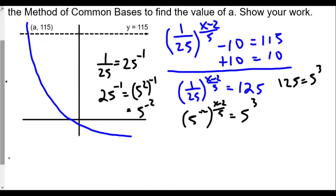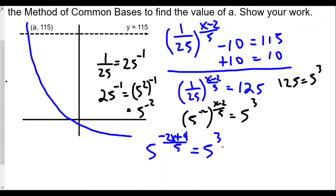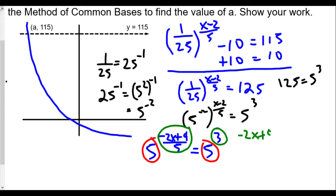Now we'll use our power rule — when you raise a power to another power, you multiply exponents. So we get 5 to the (negative 2x plus 4)/5 on the left side, because we're multiplying negative 2 with the numerator (x minus 2). This equals 5 to the third power. Now the bases are equal to each other, so we can set the exponents equal.